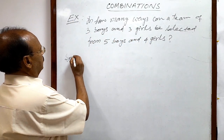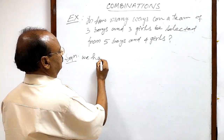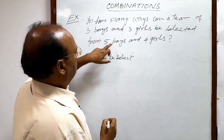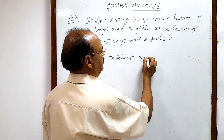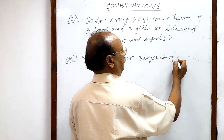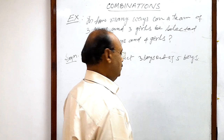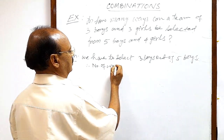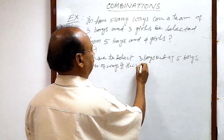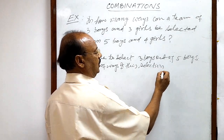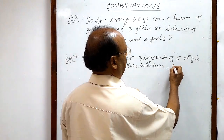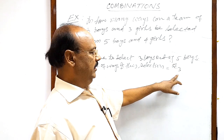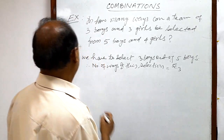Let us see the solution. We have to select three boys out of five boys. Therefore, the number of ways of this selection will be 5C3, since the total number of boys is five and we have to select three out of them.